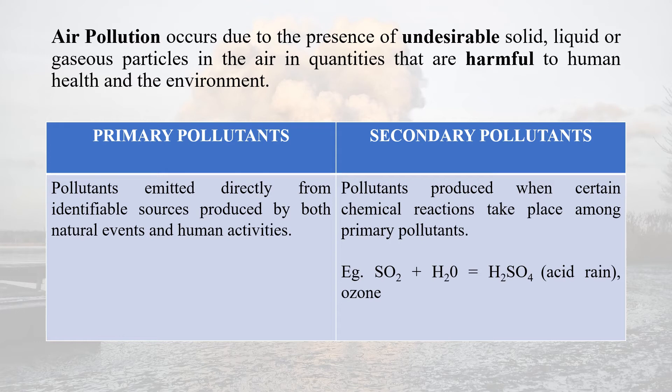Pollutants can be of two types: primary pollutants and secondary pollutants. The primary air pollutants are those that are emitted directly from identifiable sources and produced by both natural events and human activities, whereas secondary pollutants are those that are produced when certain chemical reactions take place among the primary pollutants, e.g. acid rain.